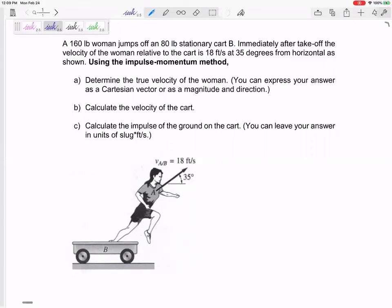Initially they're both stationary, but she's going one way. What's going to happen? This cart is going to slide backwards. Does this seem like a conservation of momentum problem? Does it seem like a collision? It is.